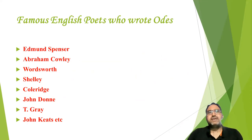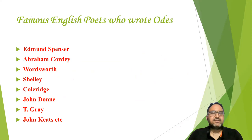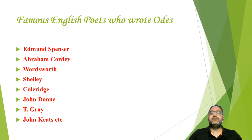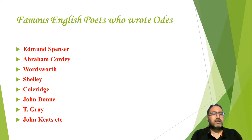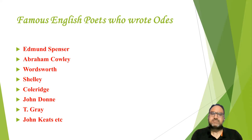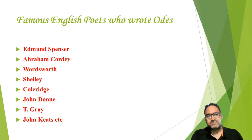I have listed some famous English poets who wrote Odes. Edmund Spenser is considered one of the first poets to write Odes in the English language. Others include Abraham Cowley, William Wordsworth, P.B. Shelley — one of the best Romantic writers — S.T. Coleridge, who was Wordsworth's contemporary, John Donne, a metaphysical poet, Thomas Gray, and finally John Keats, among others. John Keats is most important for us because we are going to study his poem.